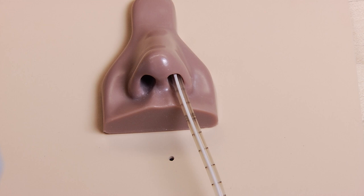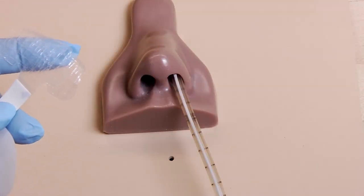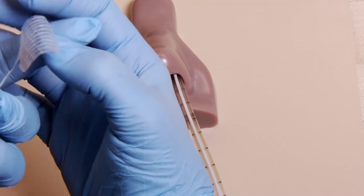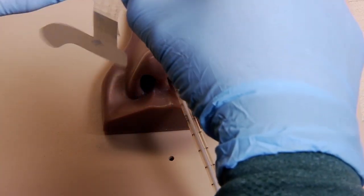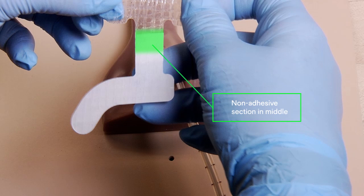As a reminder, ensure you stabilize the tube before applying the securement device and until it is completely attached to the tubing. First, remove the upper liner from the device, exposing the adhesive on the elephant's ears. Notice the non-adhesive section in the middle of the device, previously referenced to allow the tube to hang freely.